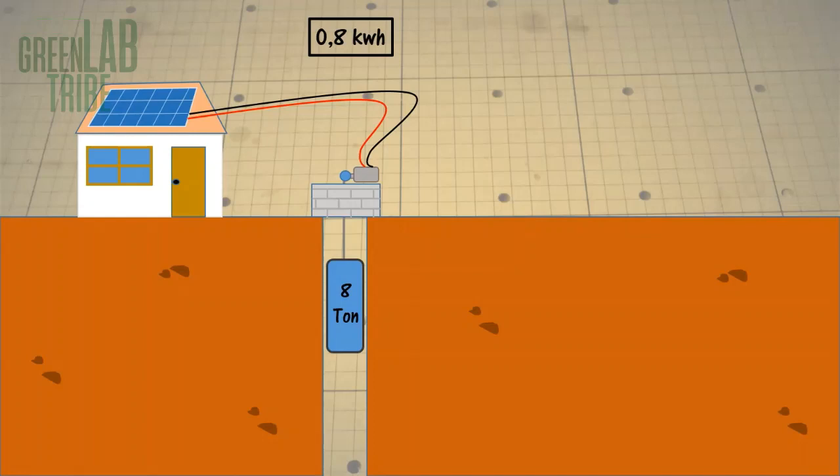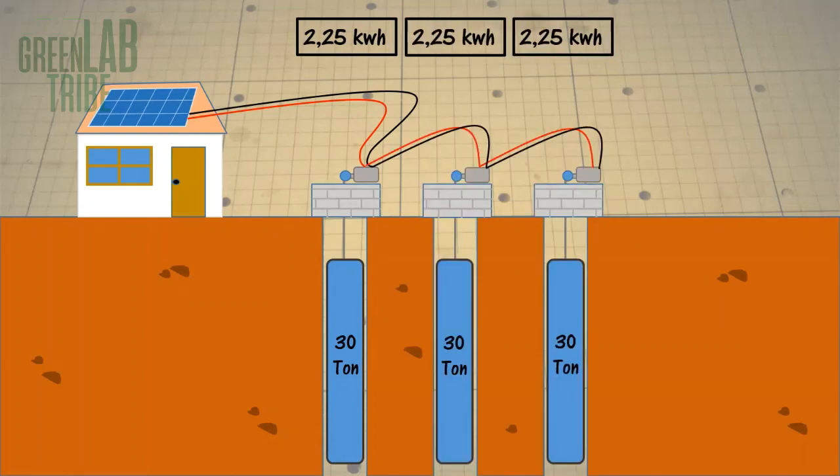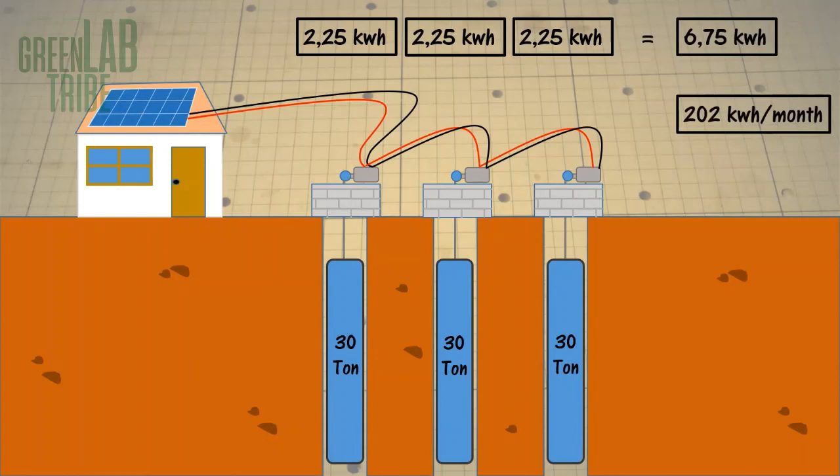If he would like to power his entire house, he needs a 30 ton weight and make 2 more holes with the same dimensions and use the same weight. That would be enough to store around 200 kWh of energy per month.